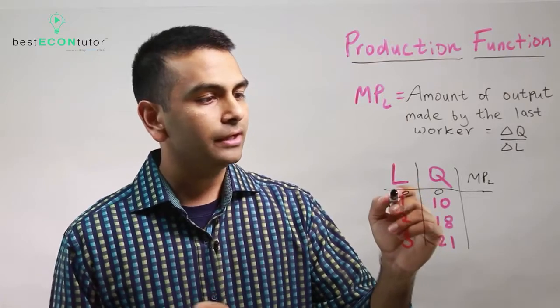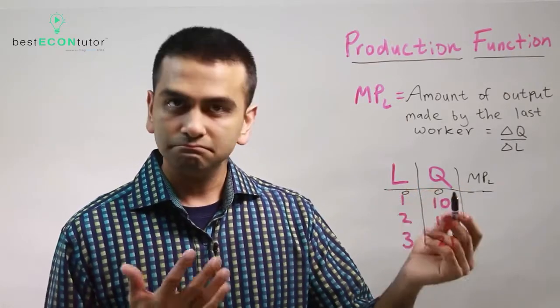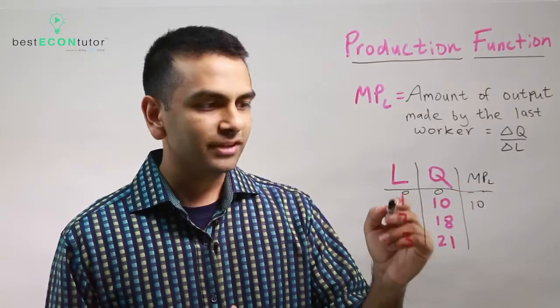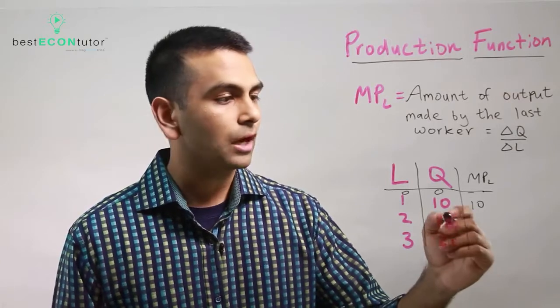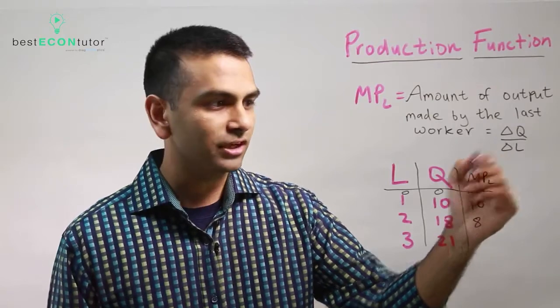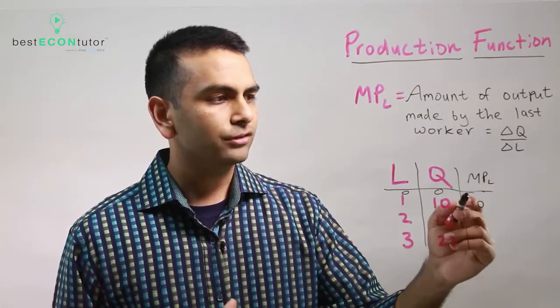We can see that the very first worker made 10 trucks, so that's 10. The second one alone made 8 because that's how much the output went up by. The formula is change in quantity divided by change in labor.